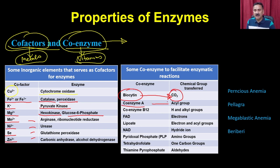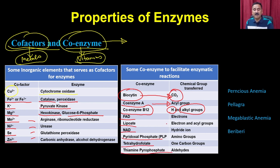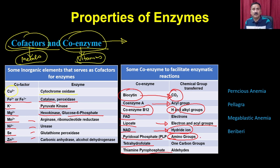We also have FAD, lipoate, NAD, pyridoxal phosphate, tetrahydrofolate, and thiamine pyrophosphate - all participating in one or other reactions. Lipoate participates in electron and acyl group transfers. NAD works in hydride ion transfer. Pyridoxal phosphate works in amino acid group changes - transferring amine groups from one amino acid to another. Tetrahydrofolate participates in one-carbon group transfers, working in nucleic acid biosynthesis. Thiamine pyrophosphate works in transfer of the aldehyde group.